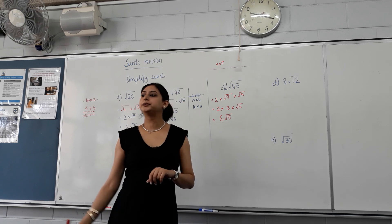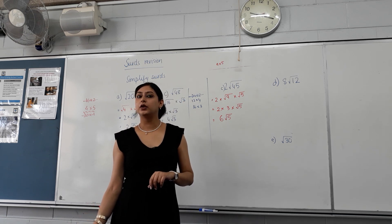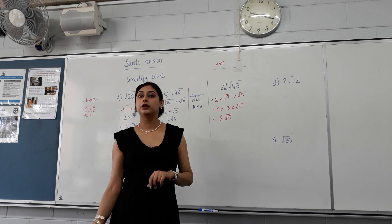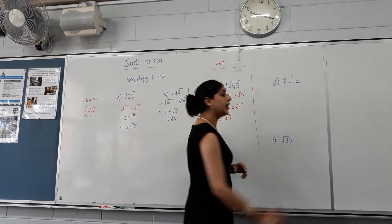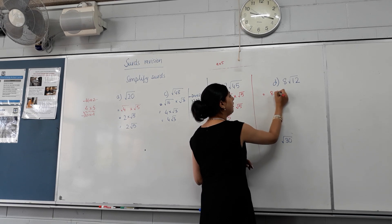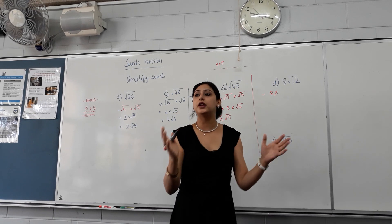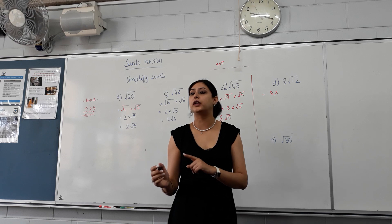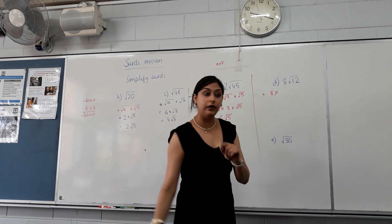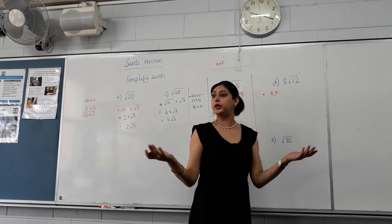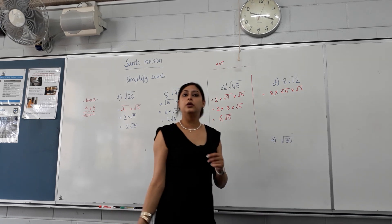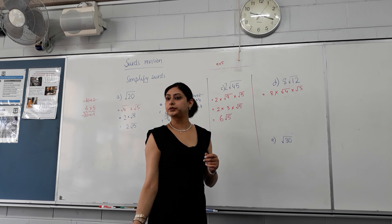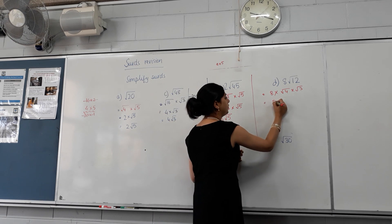Next one, 8 root 12. Again, 8 times, what can I write root 12 as? Two numbers, at least one of them a perfect square. 4 and 3. I'm happy with that. Is everyone happy with that? Yes, awesome. I like happy faces. Yes. What is root 4 equal to? Two. So 8 times 2, what's 8 times 2? 16. 16 root 3.